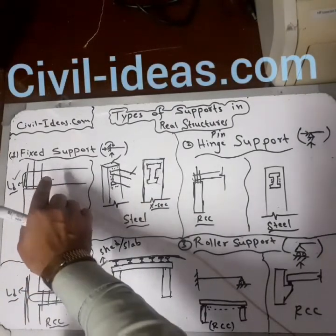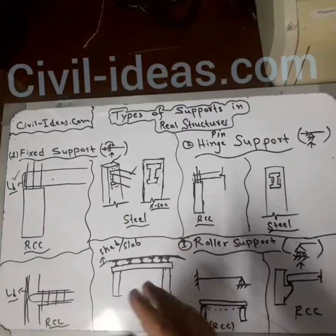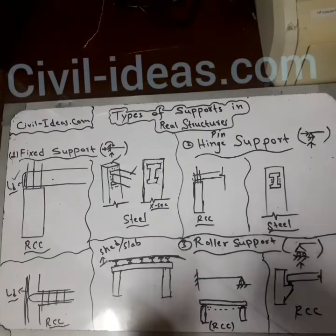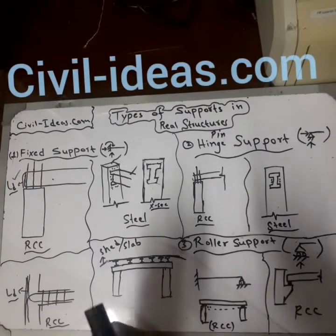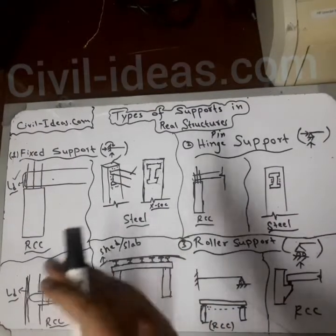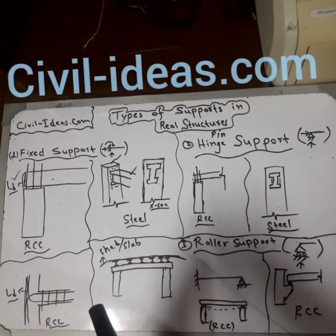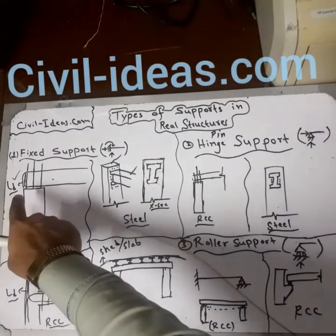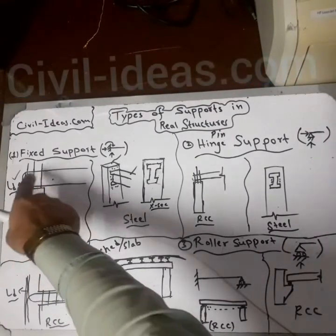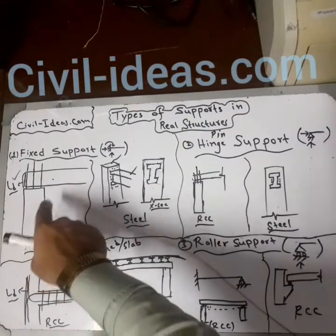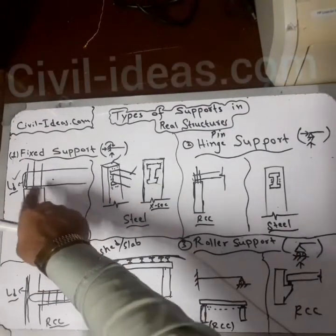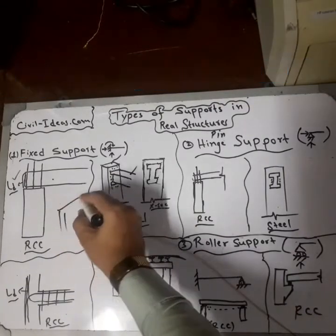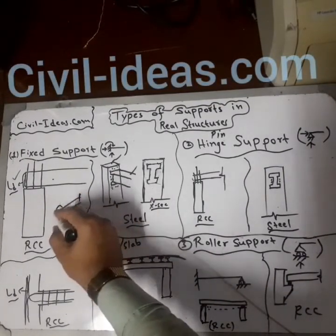For a fixed support, you have to look at the reinforcement drawings and details that the structural engineer has provided. The steel reinforcement detail will show whether the support is a hinge or fixed. When the development length (LD) is properly provided in the beam, then it is a fixed support, because only the reinforcement takes the tension, not the concrete.